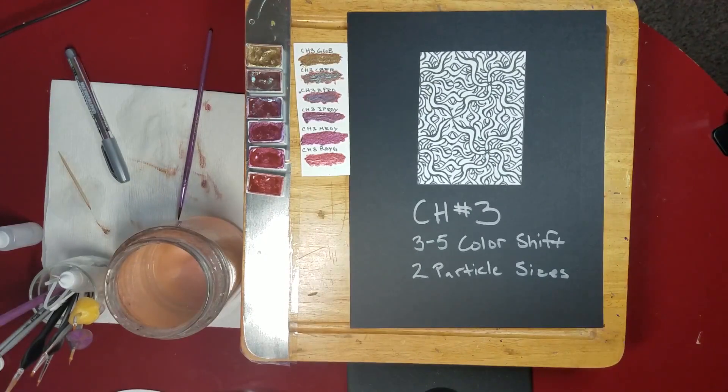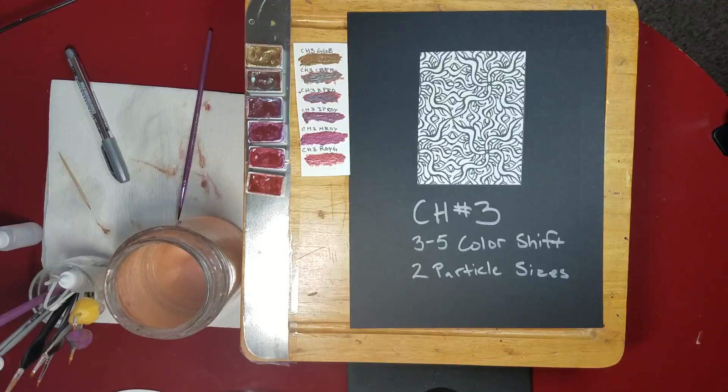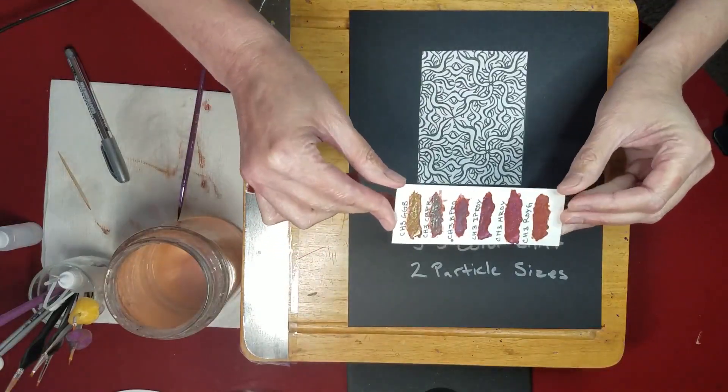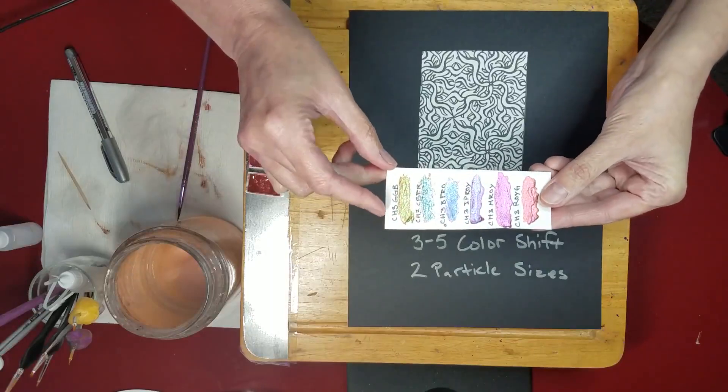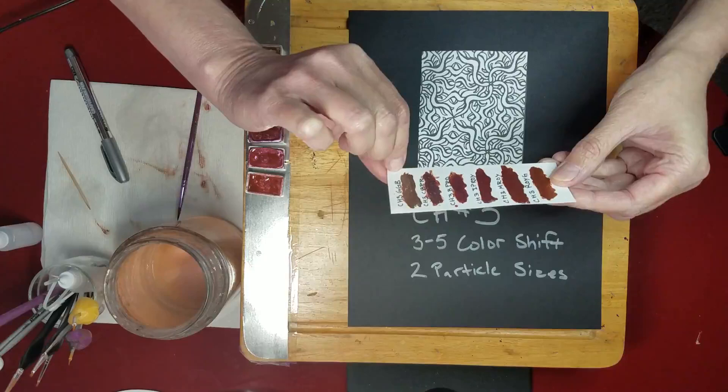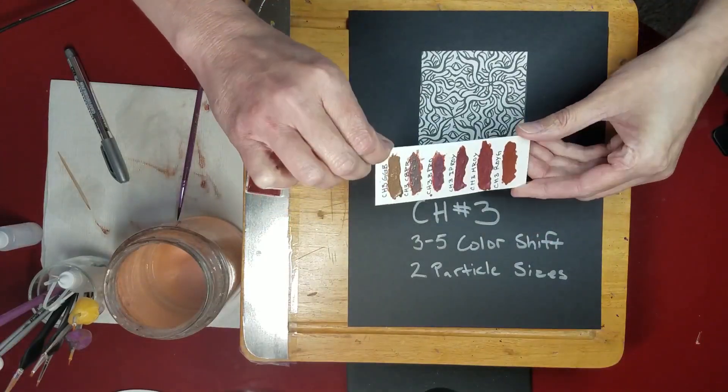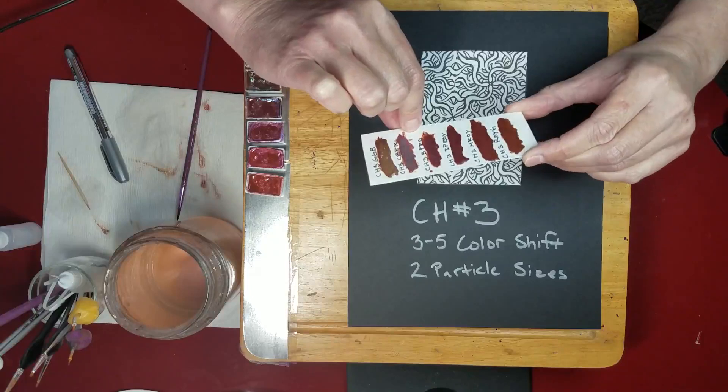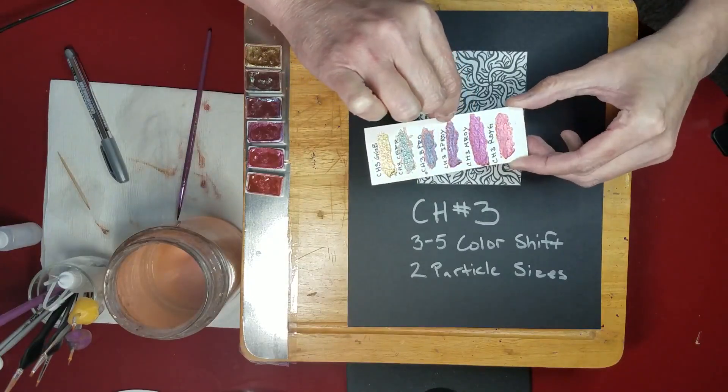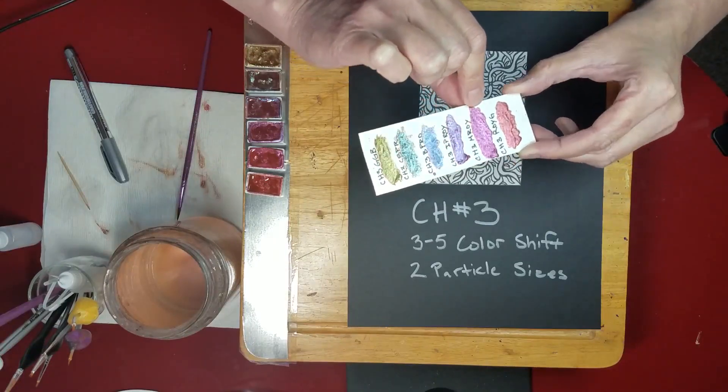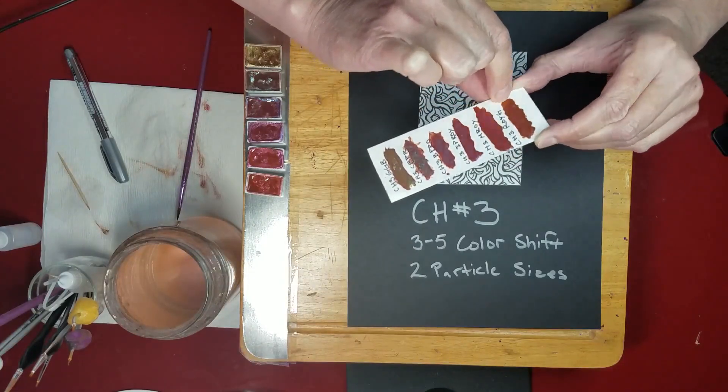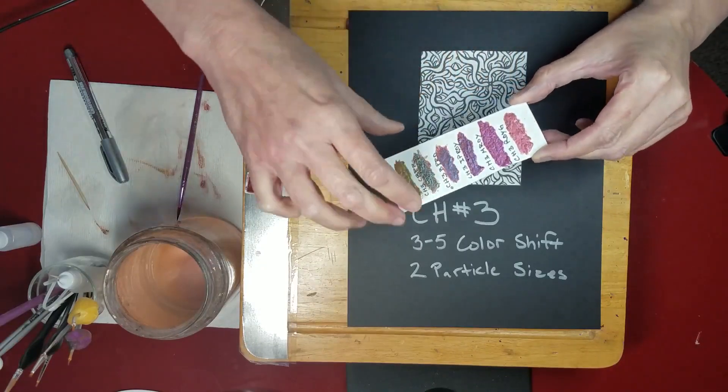This is my color shift series three chameleon colors. These shift from three to five different shifts. You can see on this little sample card I've done - we have one that's cyan blue purple red, this one is gold green blue, this one is blue purple red orange, and this one is indigo purple red orange yellow.